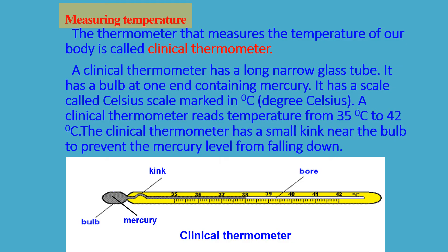How do we measure temperature using a clinical thermometer? A clinical thermometer has a long narrow glass tube with a bulb at one end which contains mercury. Mercury is a liquid metal. It senses temperature very fast and expands at very low temperatures. It has a scale called the Celsius scale, marked in degree Celsius. A clinical thermometer reads temperature from 35 degrees to 42 degrees. It also has a small kink near the bulb to prevent the mercury from falling down.